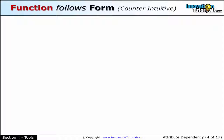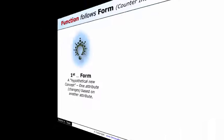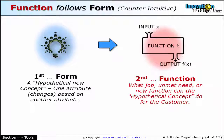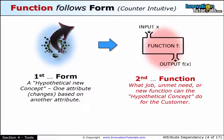Now let's contrast that to function follows form, which is much more counterintuitive. The second part of this algorithm is to determine what job, unmet need, or new function this new hypothetical concept can do for the customer. So it's kind of counterintuitive — we're first creating a solution, and then secondly we're asking: what can this solution do?